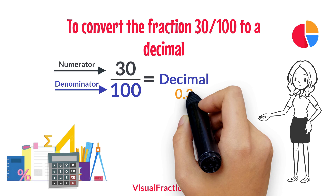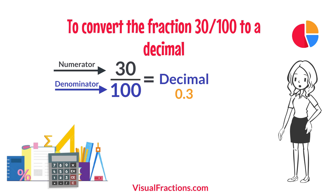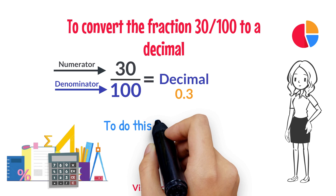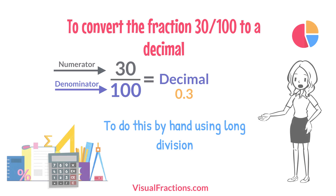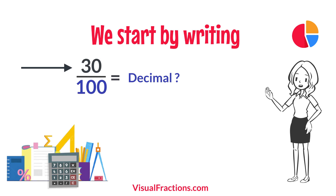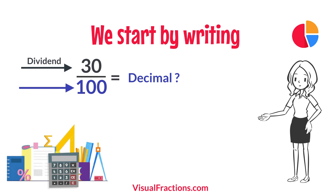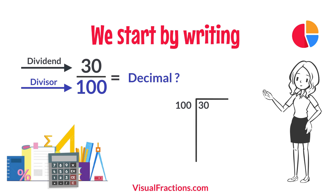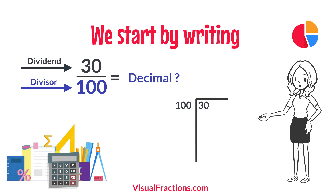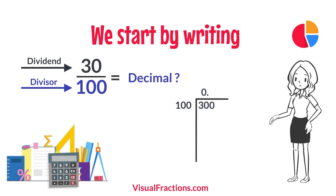The answer we get is 0.3. To do this by hand using long division, we start by writing 30 as the dividend and 100 as the divisor. Since 100 doesn't fit into 30, we add a decimal point in our answer and append a 0 to 30, making it 300.